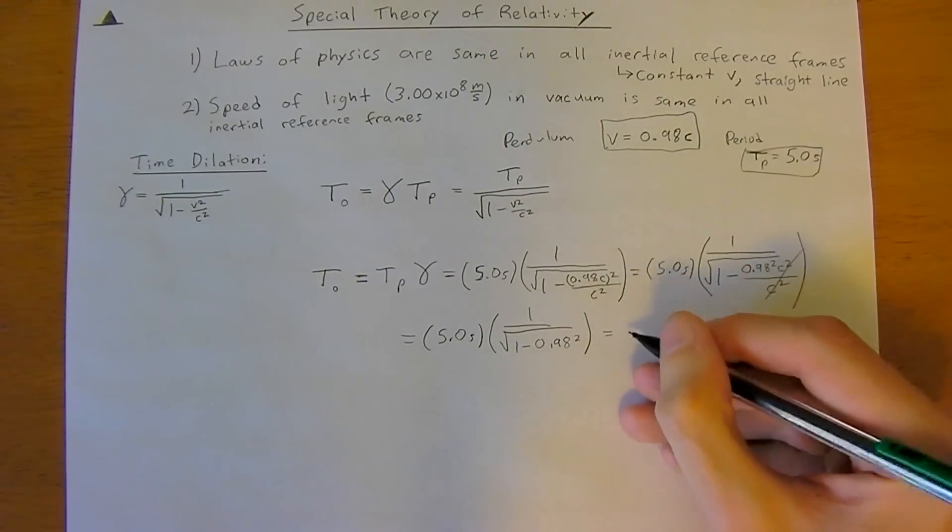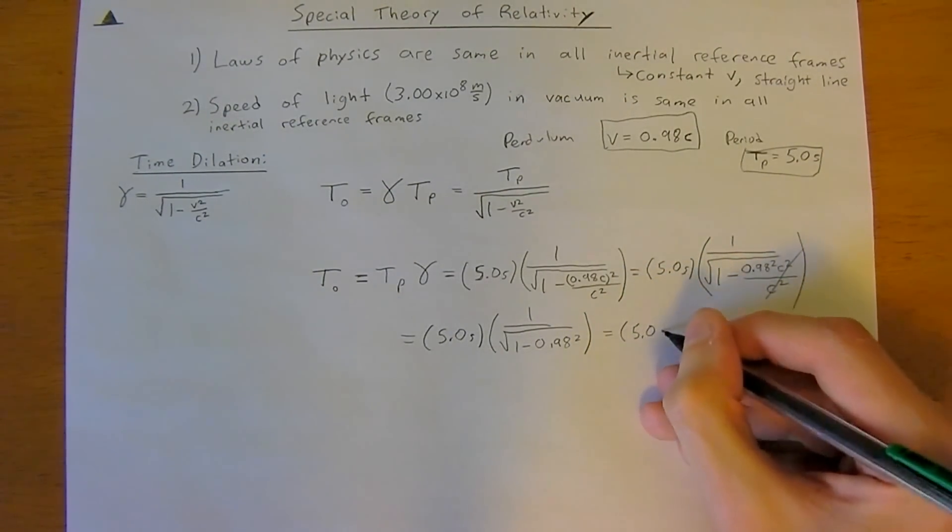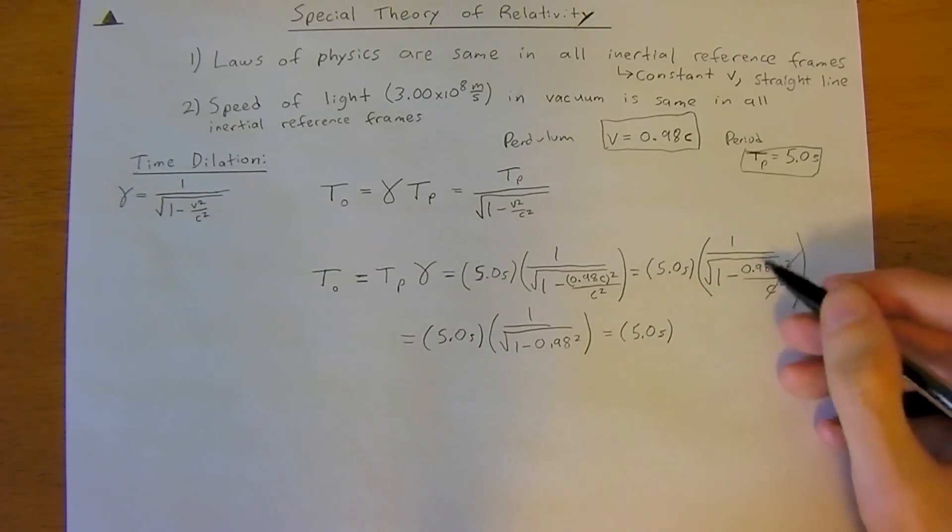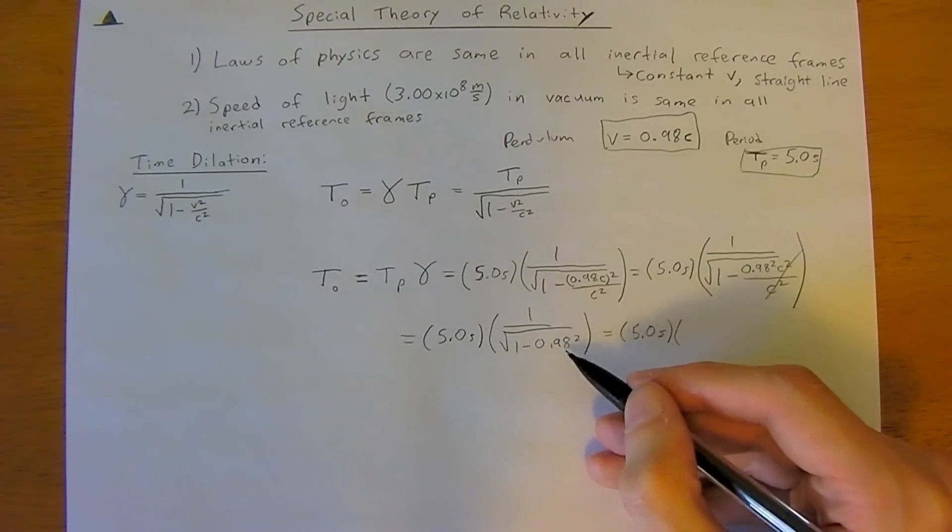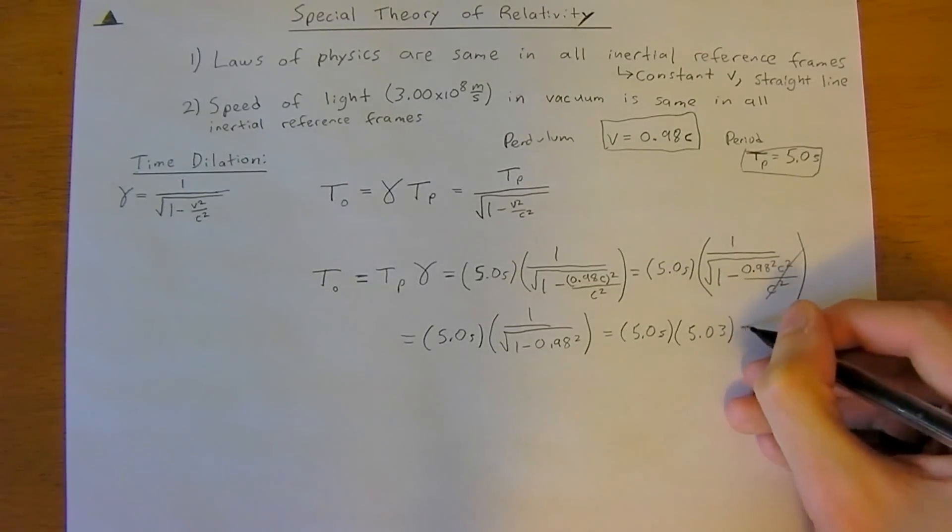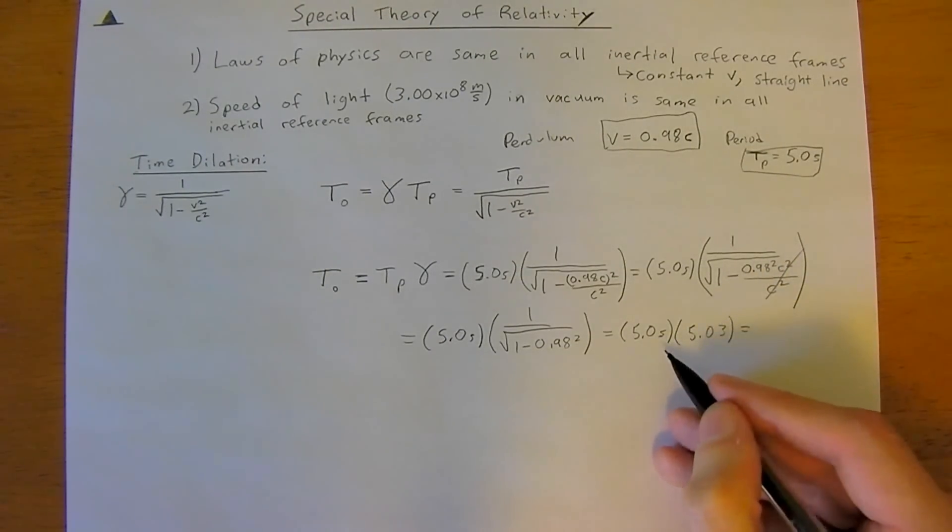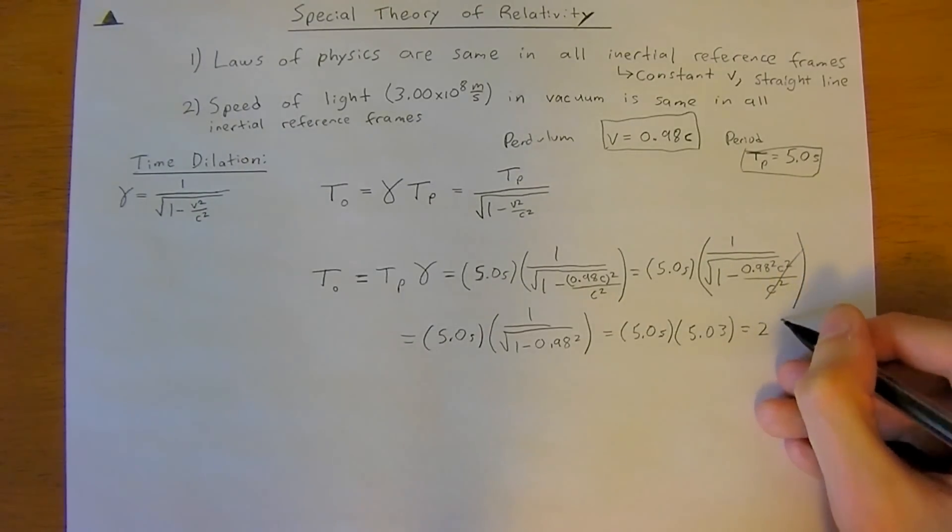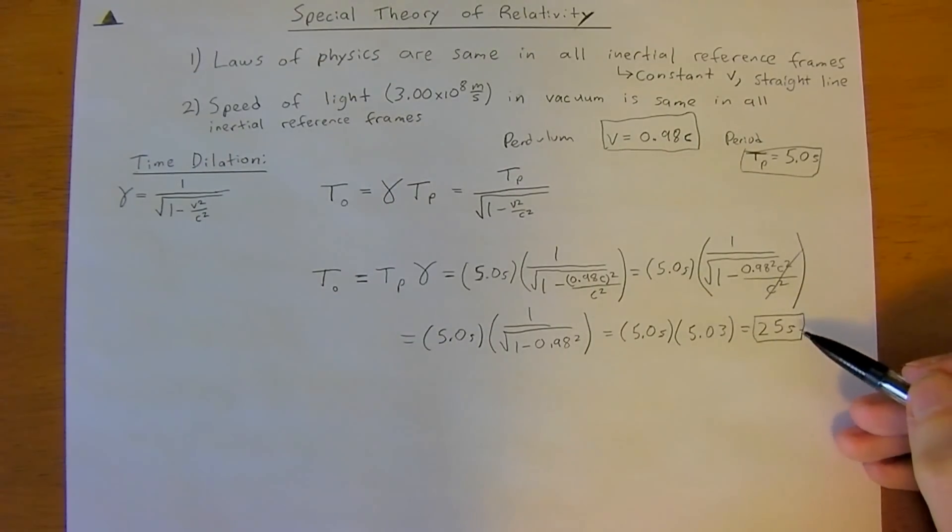And this is equal to 5.0 seconds. And the unit is actually cancelled here, so this is now unitless. And if you put this into your calculator, you get 5.03. And so, 5.0 seconds times 5.03 is equal to, we're working with two significant figures, so 25 seconds.